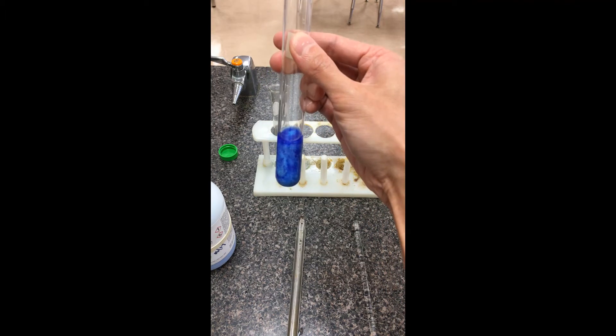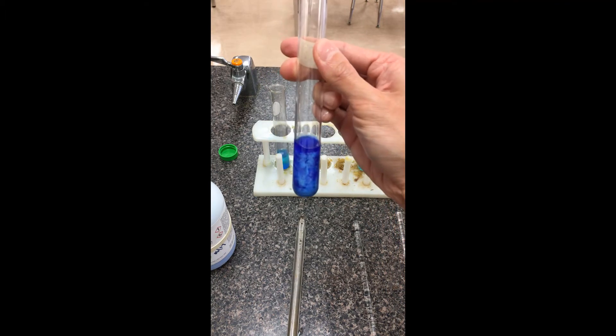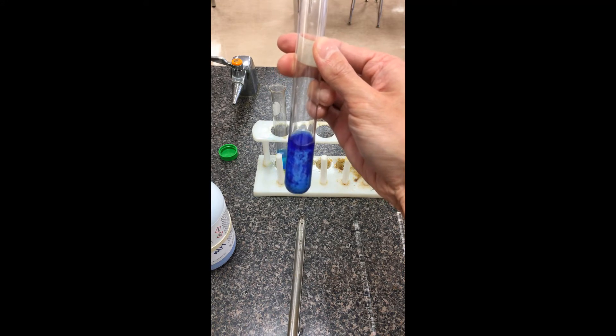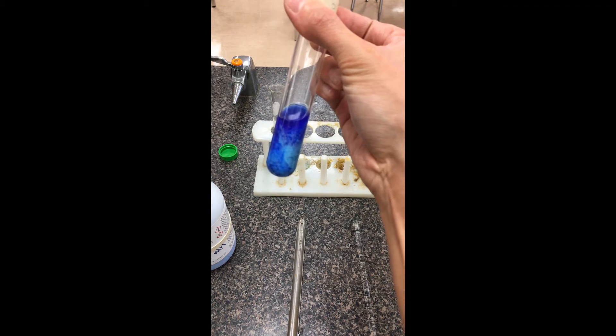Pour a little bit of ammonia. Right away you see that the color deepens into a nice royal blue kind of color here. If you're looking really closely, you'll actually see some precipitate actually forming as well.